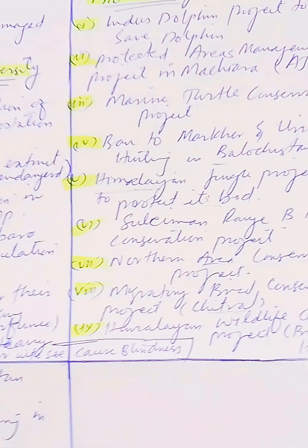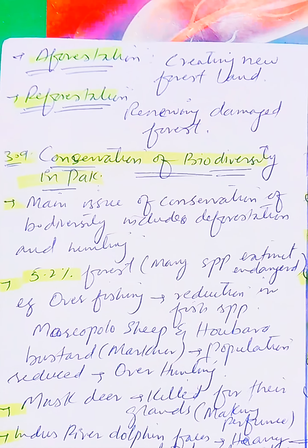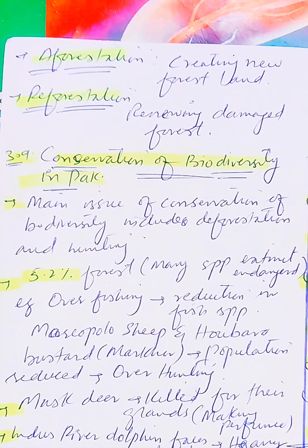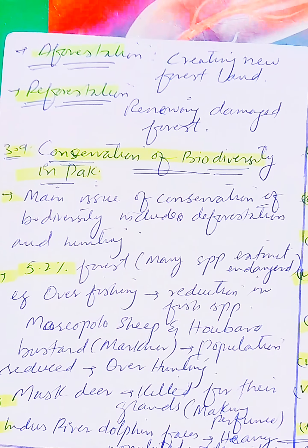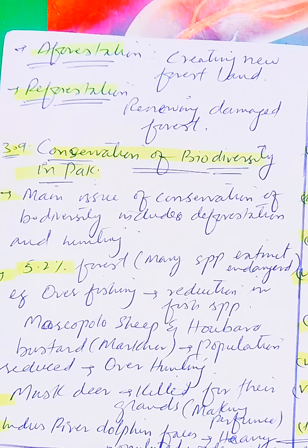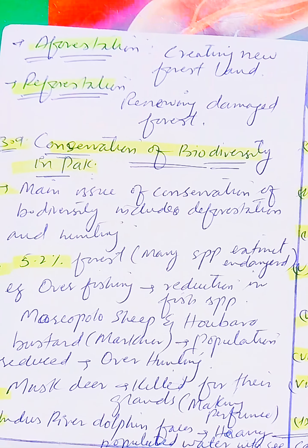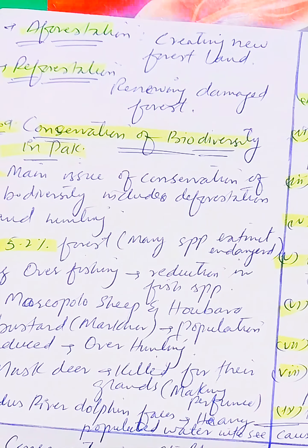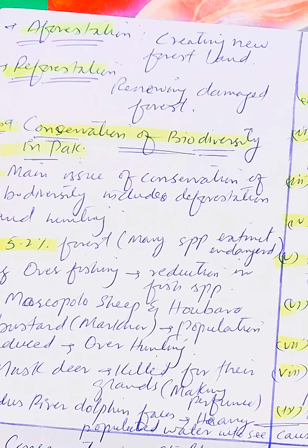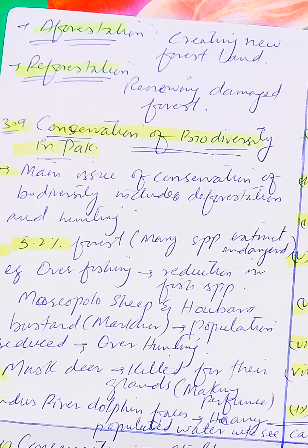The solution to deforestation is afforestation and reforestation. Afforestation means creating new forests in areas where there were none before. Reforestation means replanting trees in areas where forests previously existed.